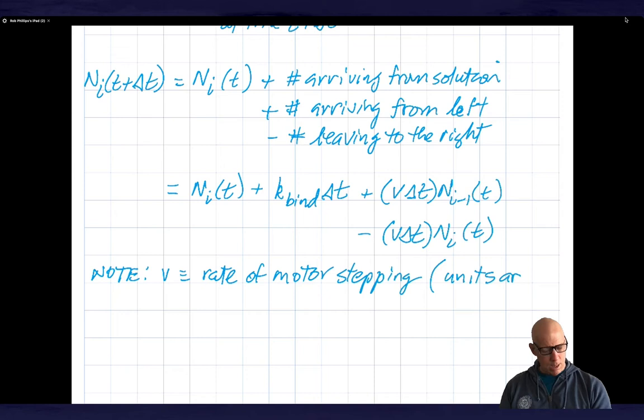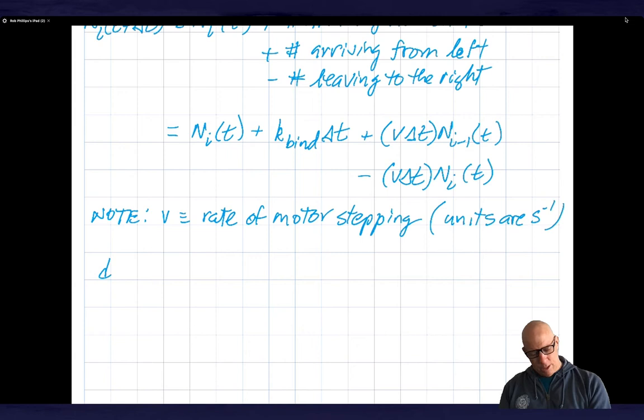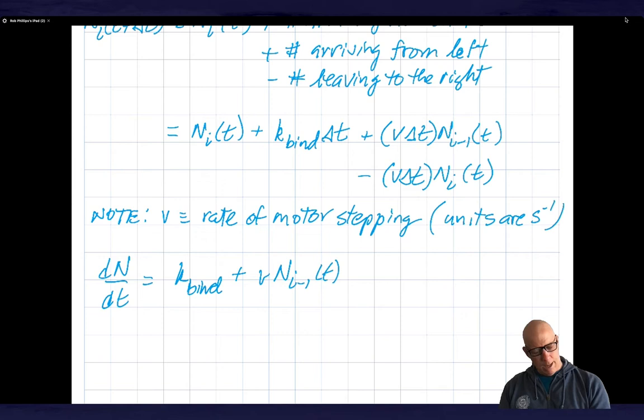So I can rewrite my equation. So dN by dt is going to be equal to k_bind. And then plus v n_i minus one, and minus v n_i of t.